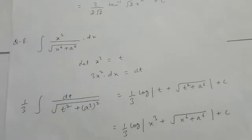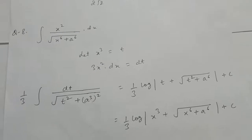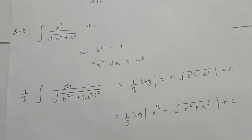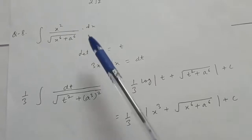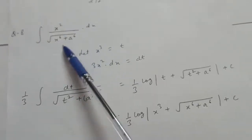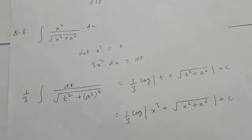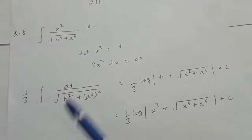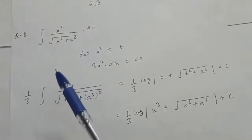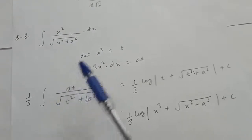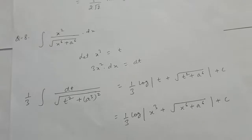Question 8th is the integral of x² upon root (x⁶ + a⁶) dx. Note that a⁶ can be written as (a³)² and x⁶ can be written as (x³)². Therefore let x³ equal to t.